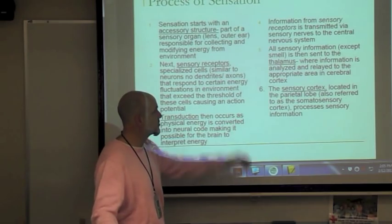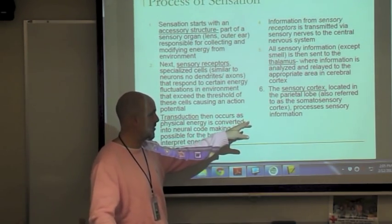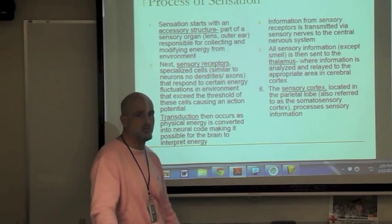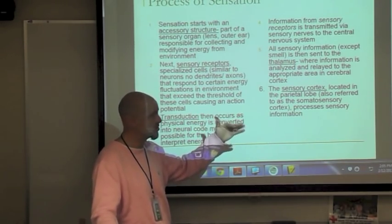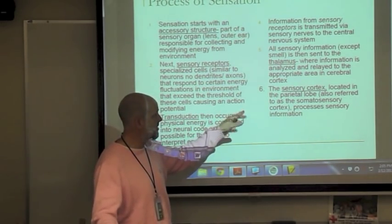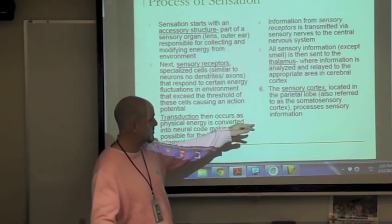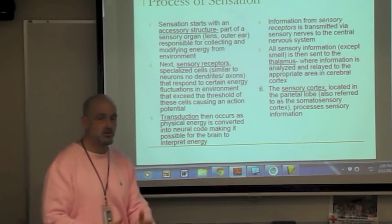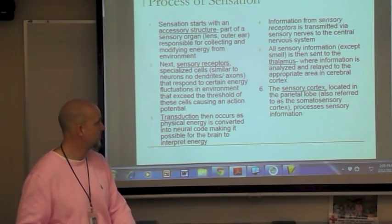The sensory cortex — also referred to as the somatosensory cortex — processes sensory information and is located within the parietal lobe. Remember, the parietal lobe is at the top part of the brain — duck, duck, goose — that's touch.